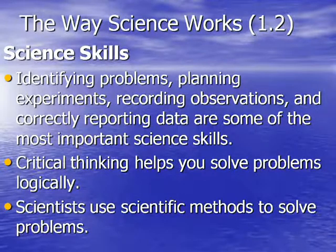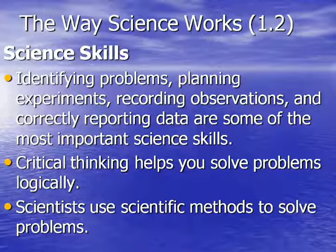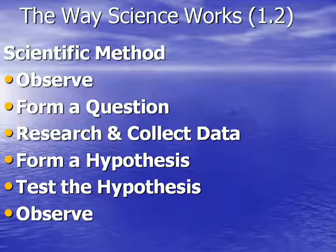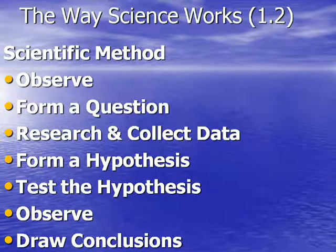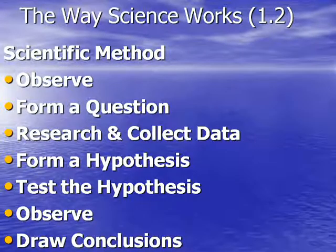Scientists use a scientific method to solve problems — it's a logical method to figure out answers to questions. The scientific method doesn't have to be used just in science; it can be applied to anything in life, like how to fix a car. The scientific method always starts with observation, which then forms a question. You research and collect data about your observations and question, then form a hypothesis — an educated guess of what you think is happening — and then test the hypothesis. Testing the hypothesis is the experiment. Then you make observations again so you can draw conclusions based on your experiment.